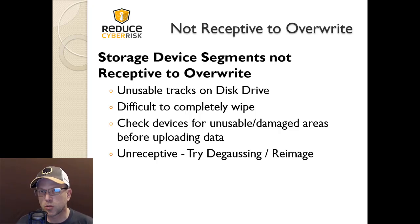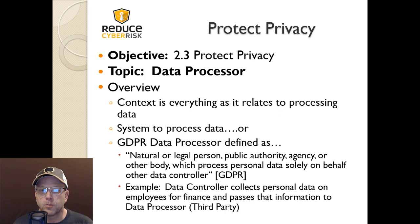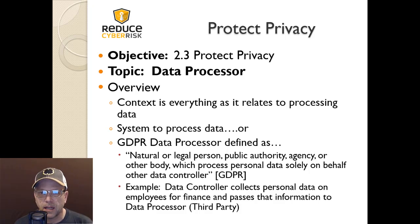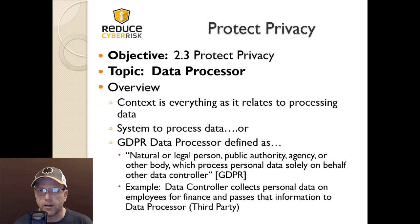Now let's roll on to the CISSP training. This is Domain 2, Asset Security, and our topic is protecting privacy — objective 2.3. The topic is the data processor, and a lot of this falls into what GDPR talks about. The General Data Protection Regulation, put out by the European Union, is a large regulation focused on managing the data privacy of individuals within the EU.